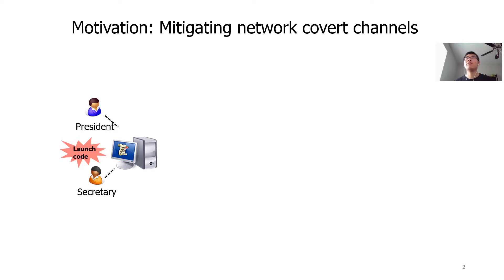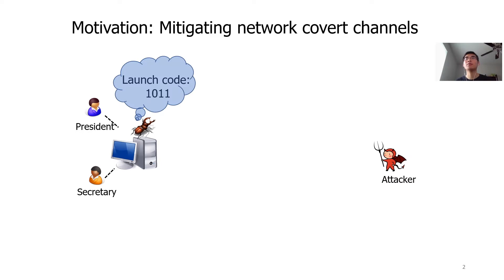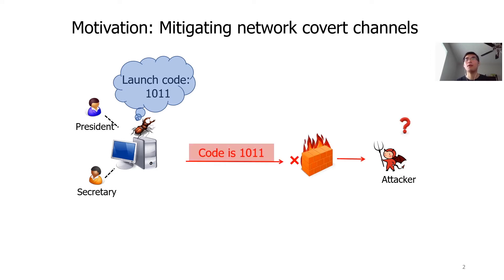Suppose you have a file server that stores very confidential information — for example, the launch code for a bomb. Unfortunately, the server has been compromised by malicious software which tries to leak the secret to the outside. One straightforward way is to pull the launch code into a packet payload and send the packet to the attacker. However, this could be prevented by a firewall which inspects packet payloads.